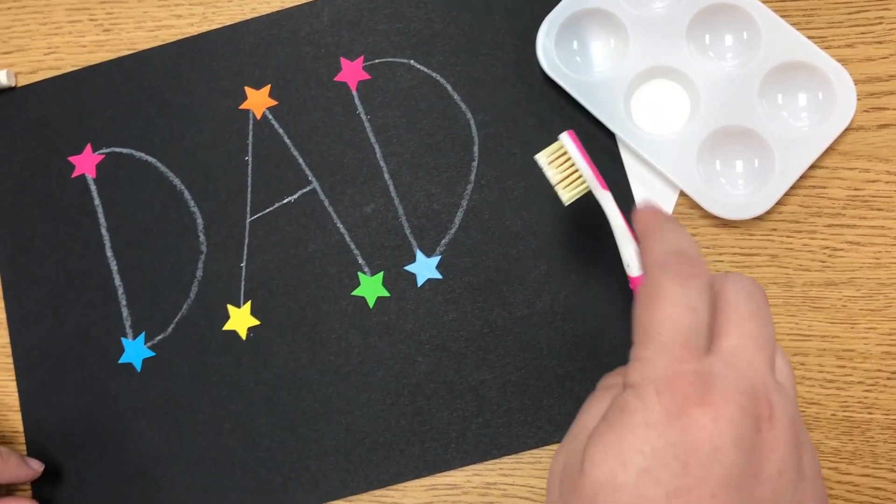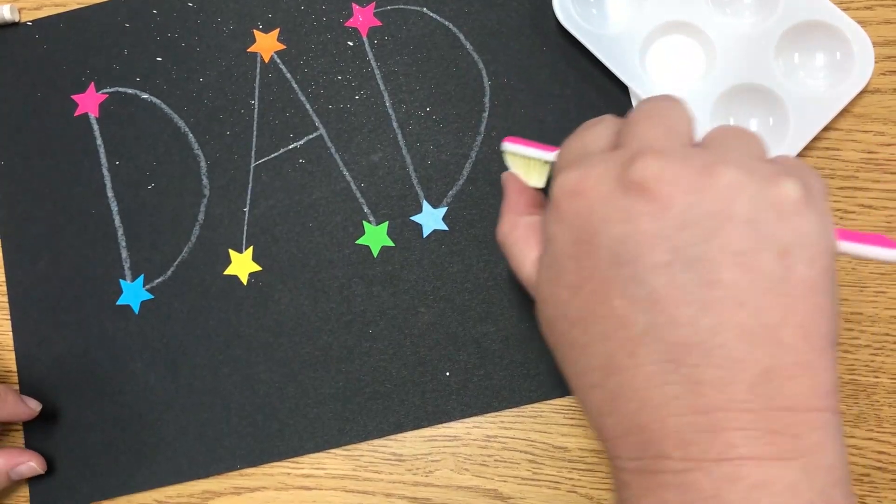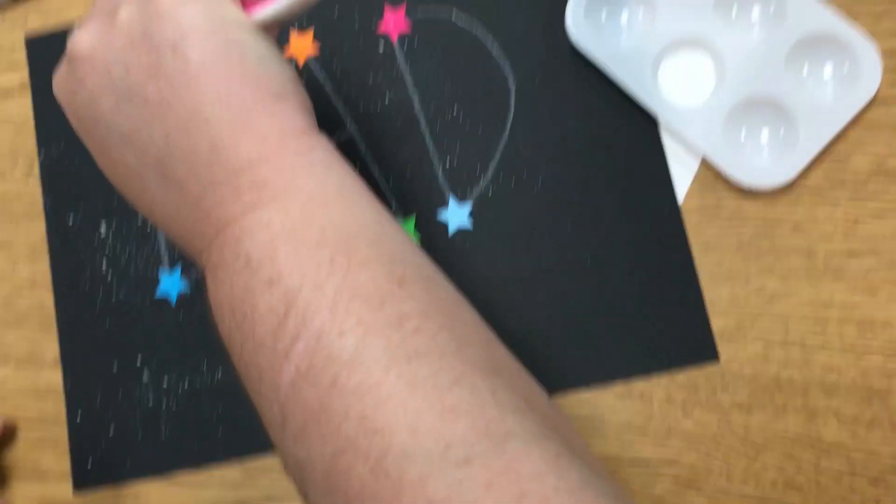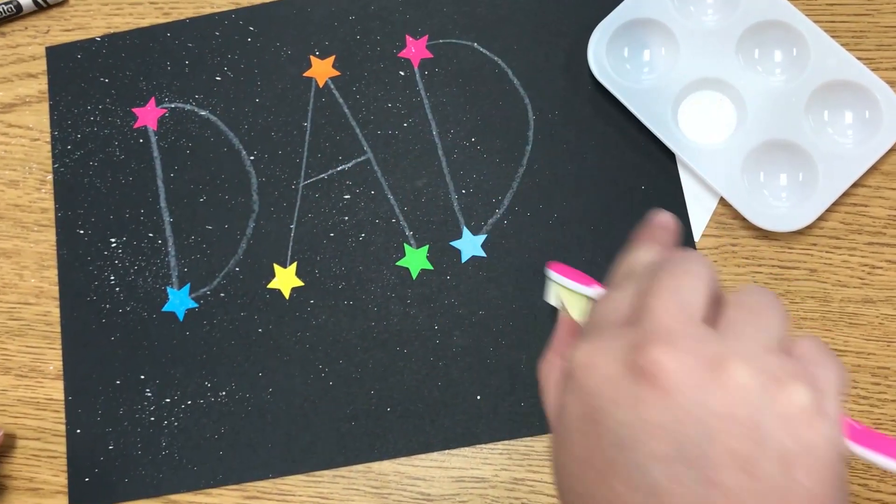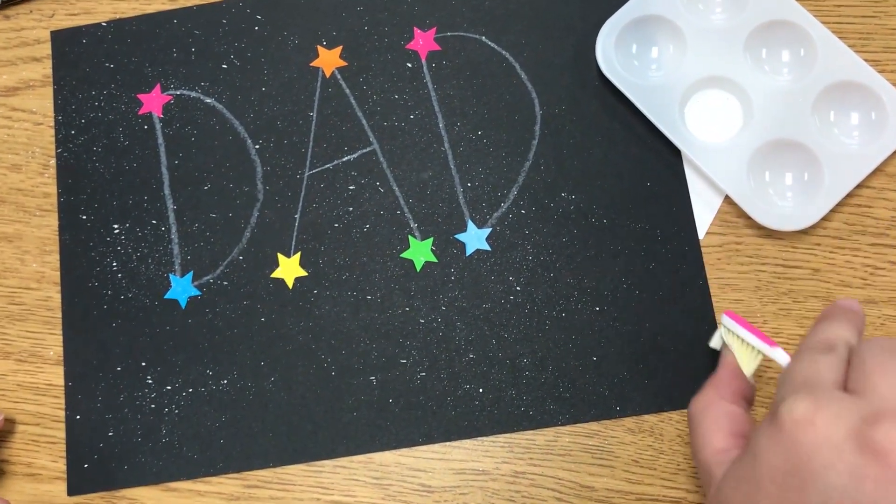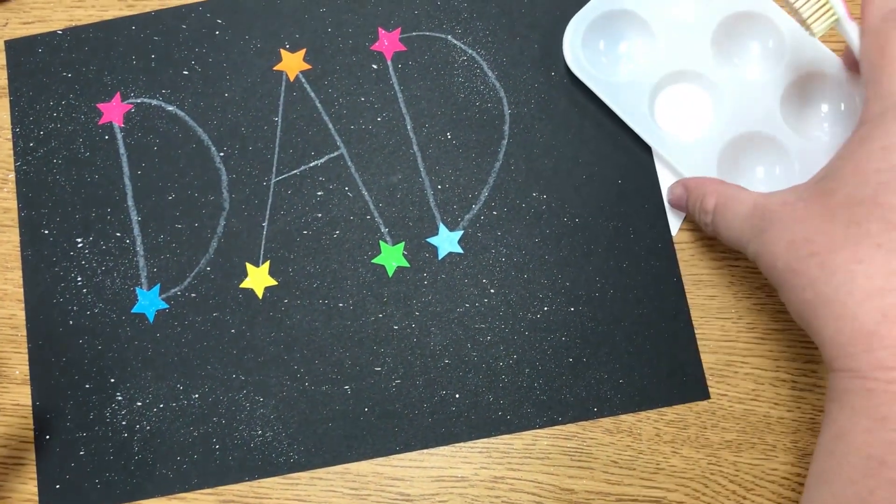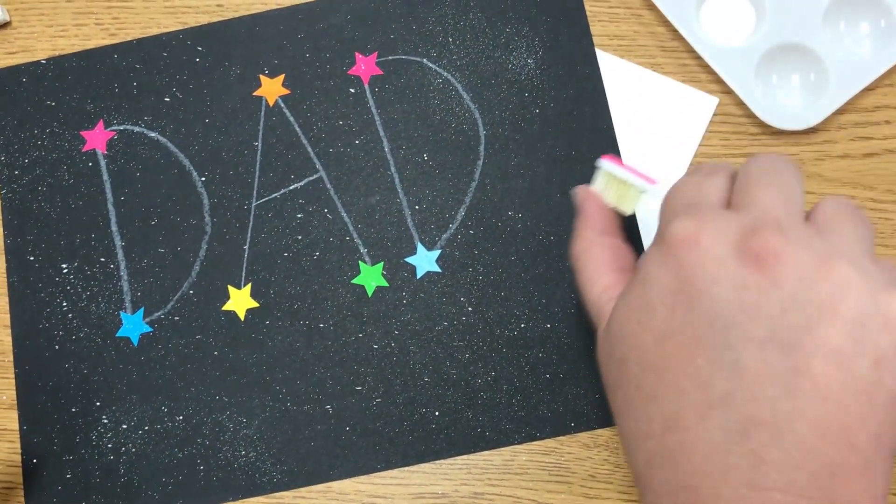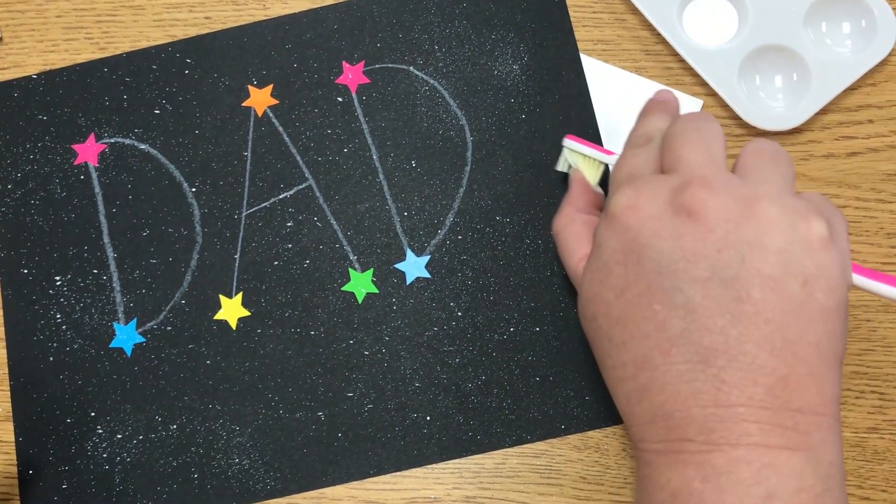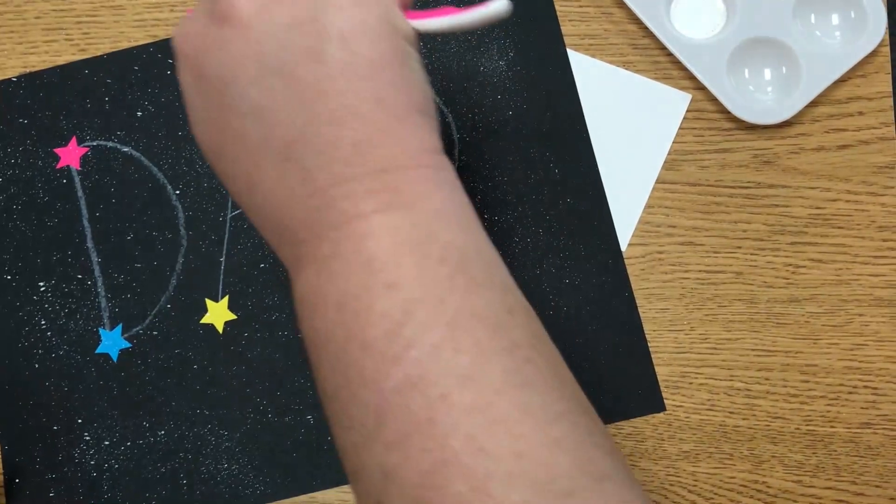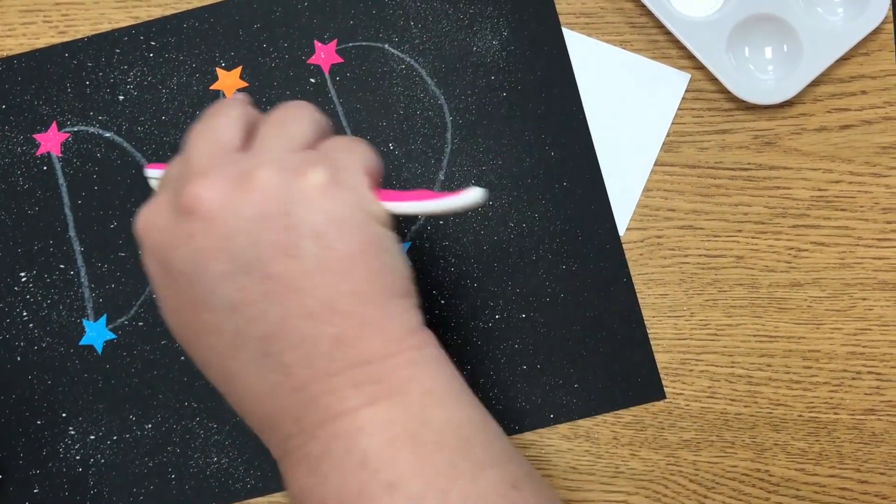Now I'm going to use my finger and kind of run it across the bristles and as I do, oh my goodness, look at that. It makes all kinds of splatters that are so cool. It looks like a galaxy full of stars. I'm just running my finger across the bristles and it makes all those little flecks of paint come out. I love this effect.